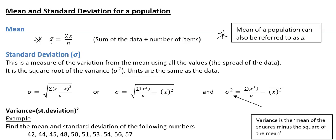It's also important to remember that the mean of a population can be referred to as μ (mu). Standard deviation is denoted σ (sigma). The standard deviation is a measure of the variance from the mean using all the values — simply put, it is a spread of the data. The bigger the standard deviation, the more spread out the data values will be. The standard deviation is also the square root of the variance.